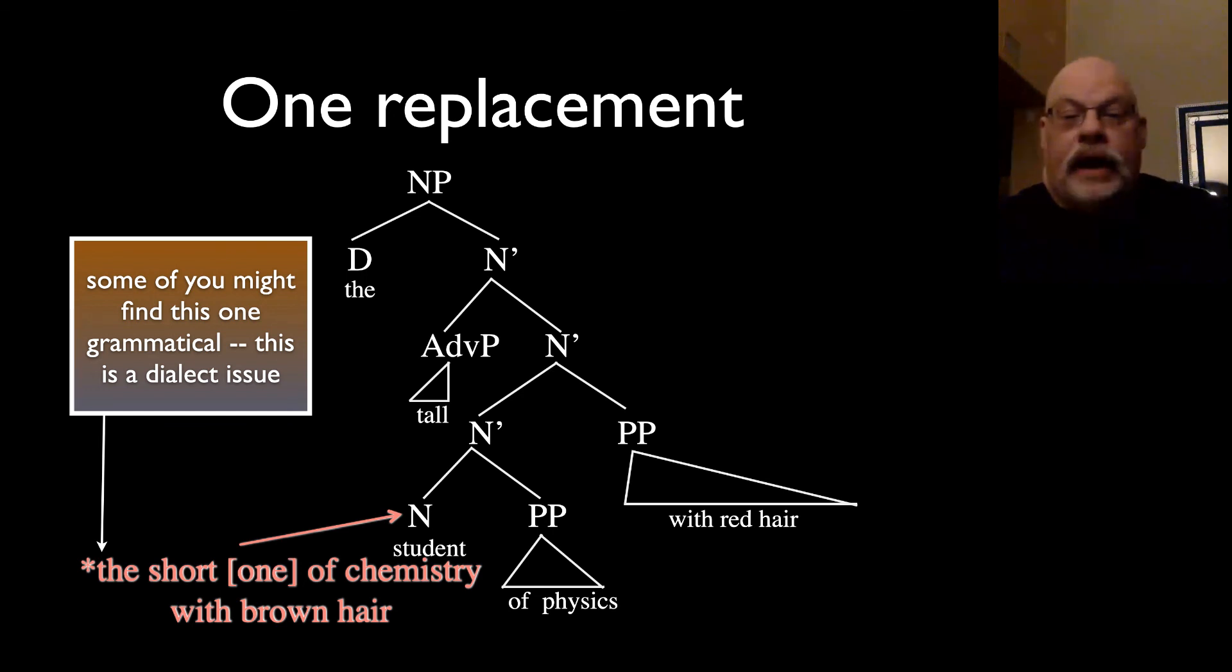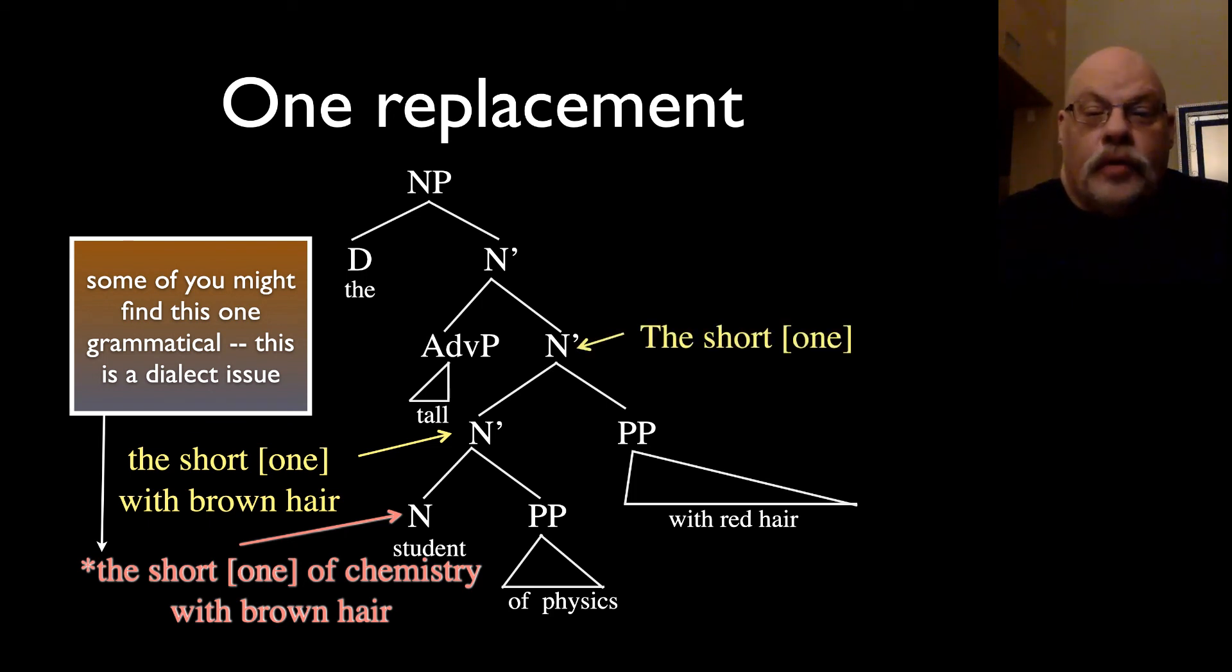Okay, let's look back at those sentences that we talked about before. So if you are replacing our whole noun phrase with the short one with brown hair, you're targeting that lowest N bar category. If you're saying the short one, then you're targeting the next N bar category up. And if you're just saying this one, you're replacing the N bar category on the very top. You can't replace the noun phrase that you can't just say one. So this structure predicts what the possible one replacement options are.